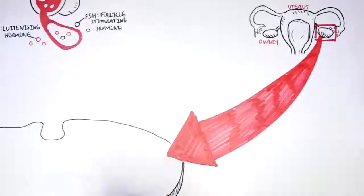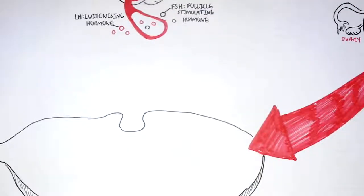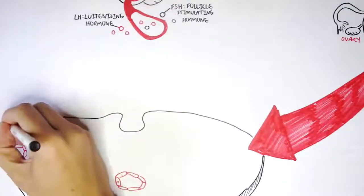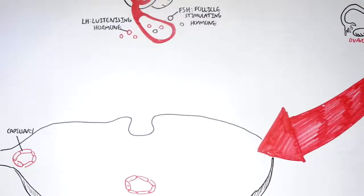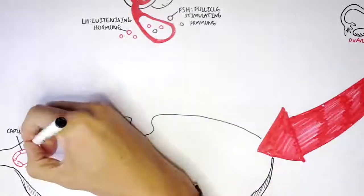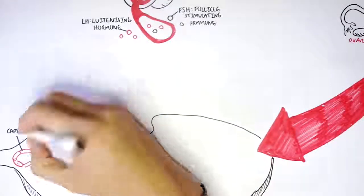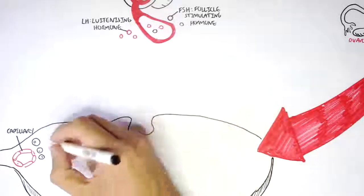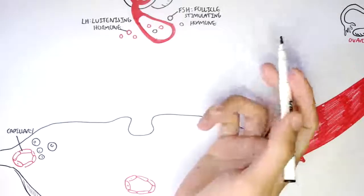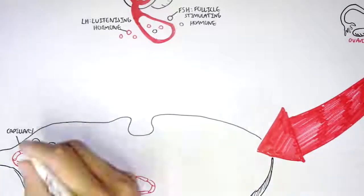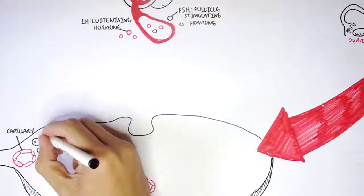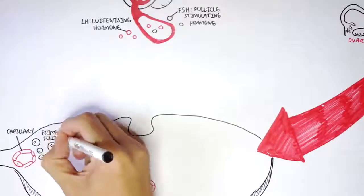Here is the ovary. It has blood vessels — capillaries — through which hormones can enter. Within each ovary there are follicles. Women have many, many follicles in the ovaries, and each month only some will begin to mature. But only one will ovulate and produce an egg.